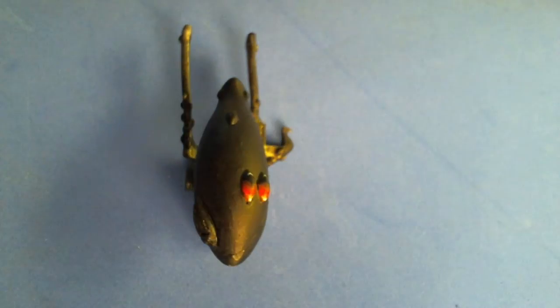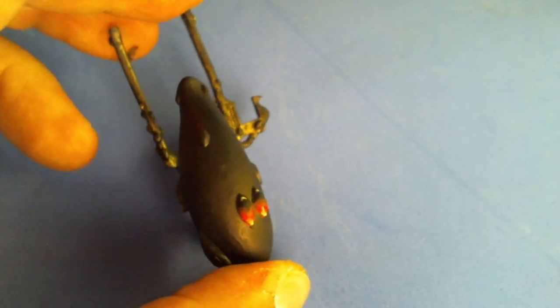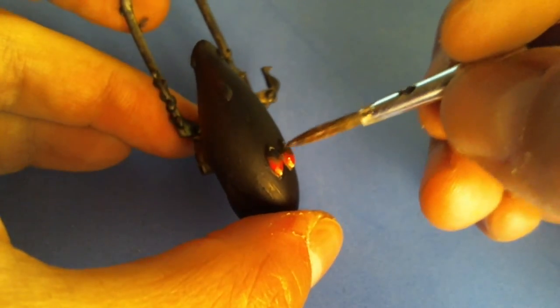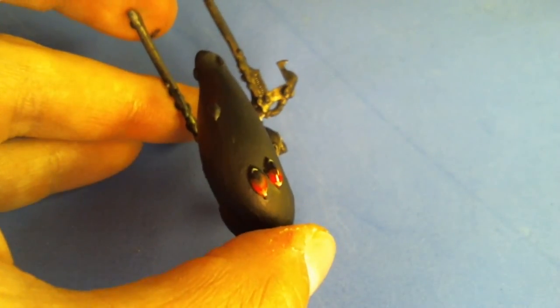I used gloss varnish to give it a bit of extra glossiness so that the gem will look really like a stone or a gemstone.